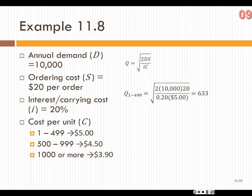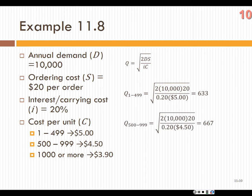Moving to the next range, 500–999 units at $4.75: EOQ = sqrt(2 × 10,000 × $20 / (20% × $4.75)) ≈ 667 units. Is that feasible? It is — 667 falls within the 500–999 range. But I still don't know whether it's the lowest possible cost, so I have to keep working through.